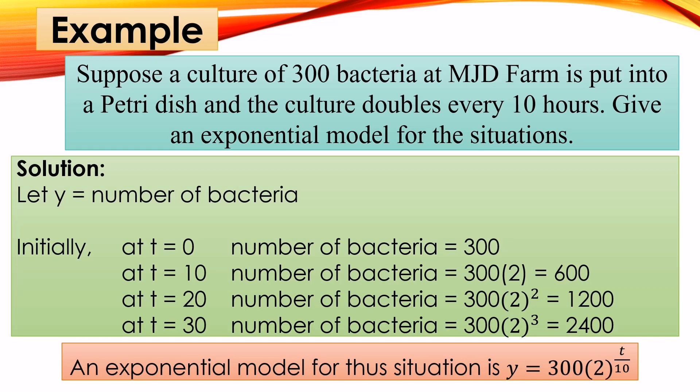The exponential model for this situation is y = 300 · 2^(t/10). The 300 comes from the initial bacteria count, the base 2 comes from the word 'doubles,' and the 10 in the exponent comes from the doubling period of every 10 hours.